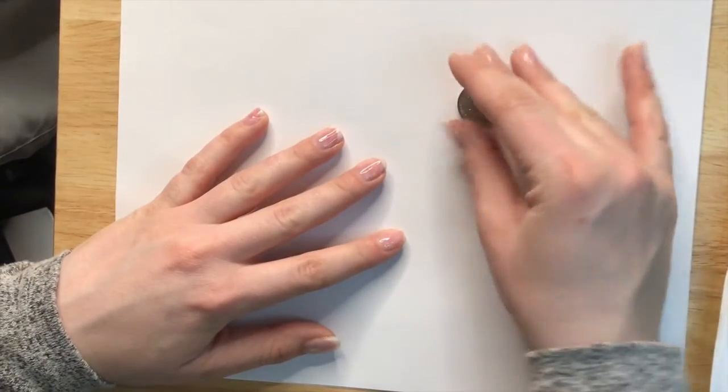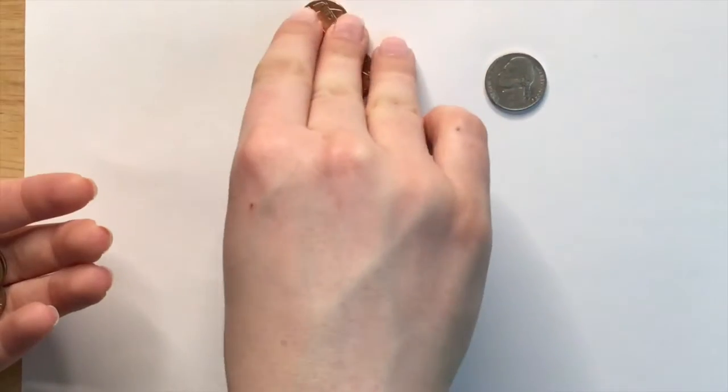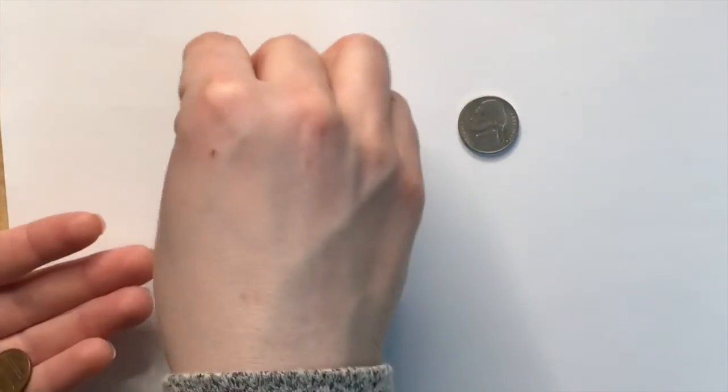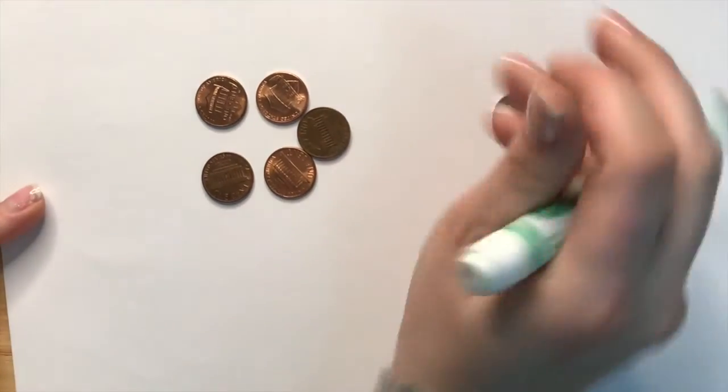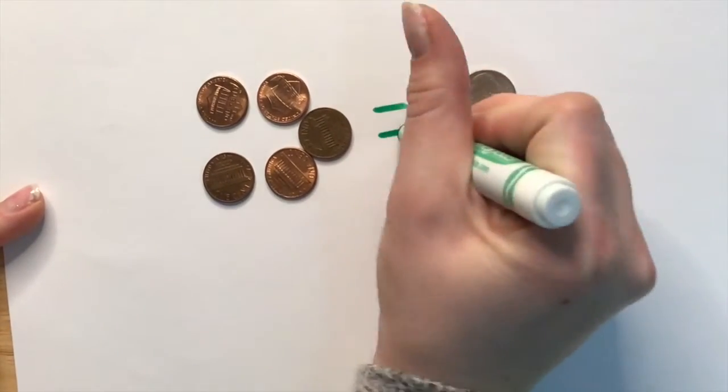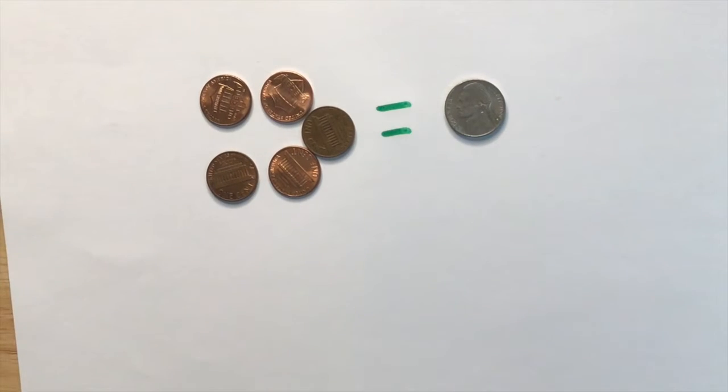So what we're going to do now is compare these values of these different coins together. So when we look at a nickel we know that a nickel is worth five cents. So if we wanted to compare that to pennies we can say that a nickel is worth five pennies. So I'm going to write that and I'm going to put that right here. One, two, three, four, five. So five pennies equals one nickel. So I just want you to see that that's the comparison between one penny and a nickel, five pennies and a nickel.